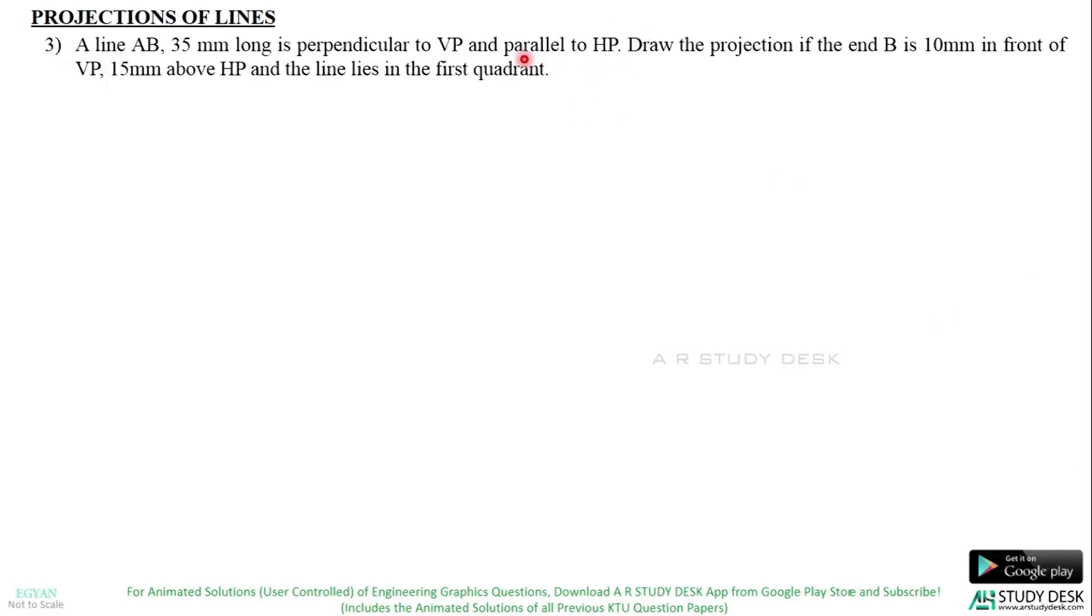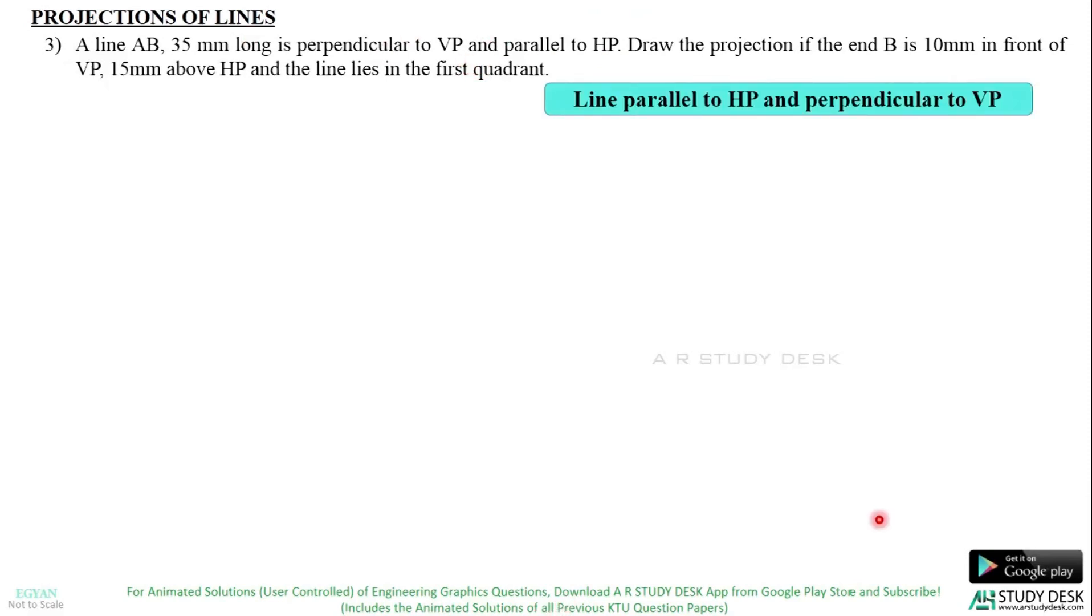So here the line is parallel to HP and perpendicular to VP. So let us see how the line is positioned with respect to HP and VP. So this is our line AB in which the end B is 10mm in front of VP and 15mm above HP.